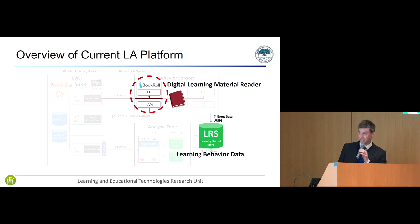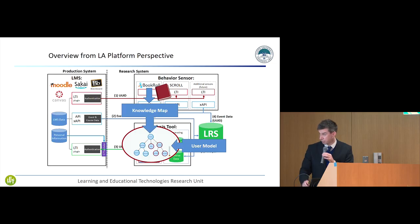You've heard BookRoll many times now. Basically it's an e-book reading system and it records learning behaviour data, reading behaviour data in the LRS. My research is to take the actual contents from BookRoll and also the user models from the analysis of learning data from the LRS. And create the knowledge map that is overlaid with learning analytics results.